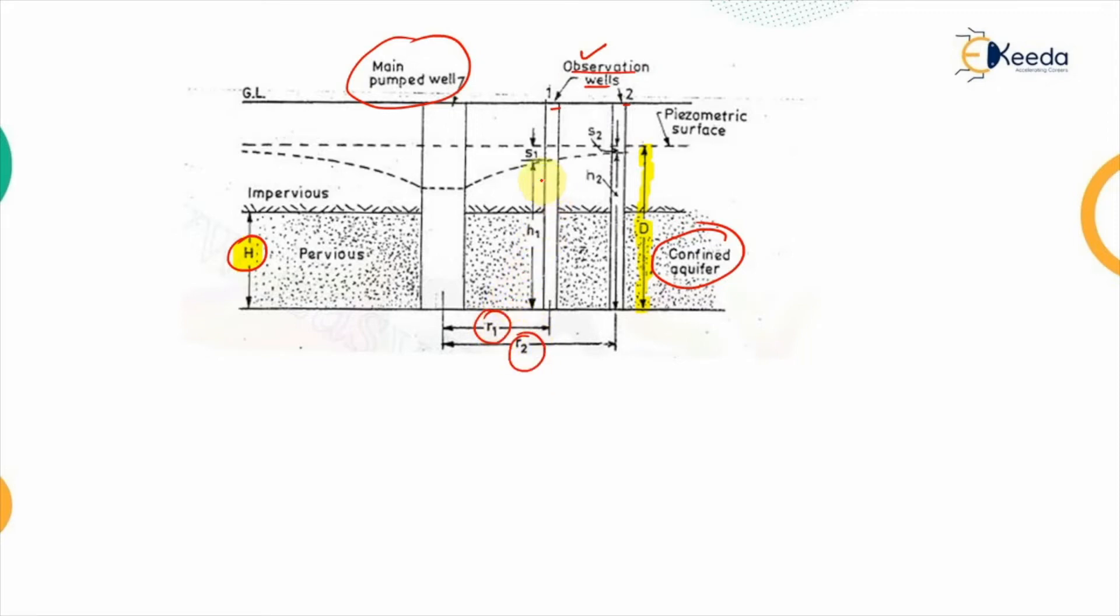Corresponding to them, the drawdown is S1 and S2 that is represented in the piezometric surface, not the actual one. And both the sides are impervious. That means the water cannot seep out of this.